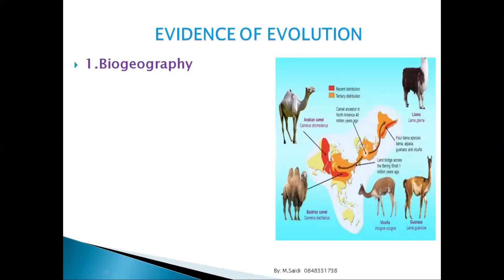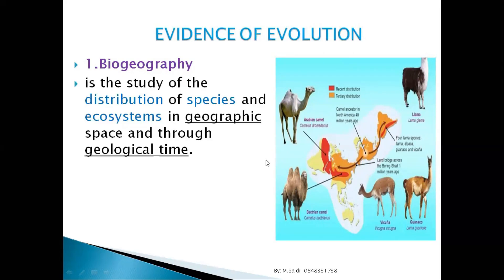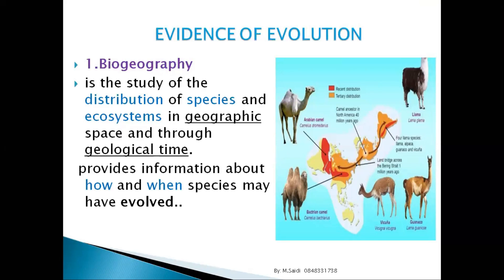Look at these camels — they share the same ancestor but moved to different areas. As they went to different areas, they modified and adapted differently, which helps us understand how and when these species evolved.